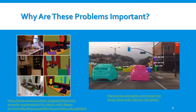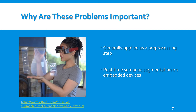This problem is important for several applications, including autonomous systems and robotics, where the input is required to be processed quickly to enable responsive interactivity with the environment. Moreover, semantic labeling is typically applied as a pre-processing step for other time-critical tasks. There is also the idea that real-time semantic segmentation on embedded devices may facilitate applications such as augmented reality for wearables.